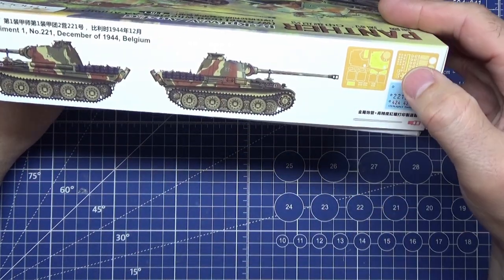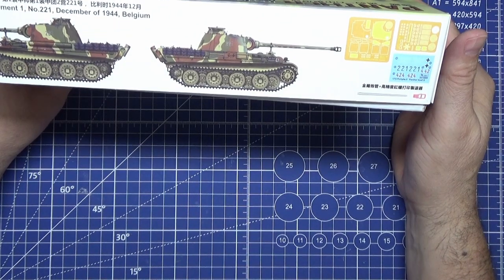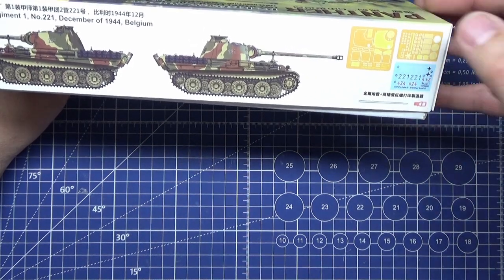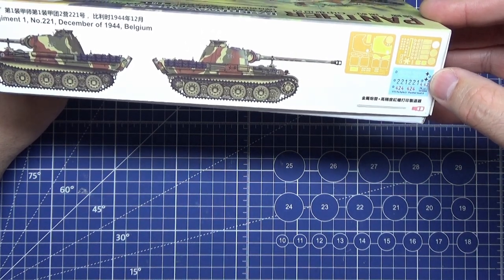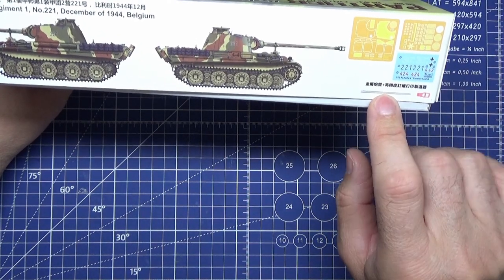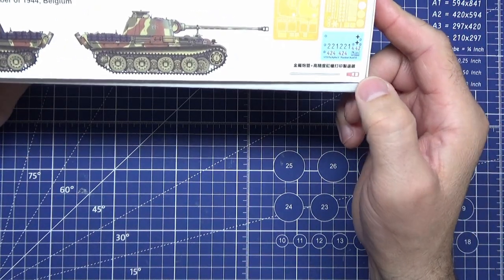It shows you two photo-etch sets, one decal set, one metal barrel, and I believe that's a 3D printed muzzle brake.